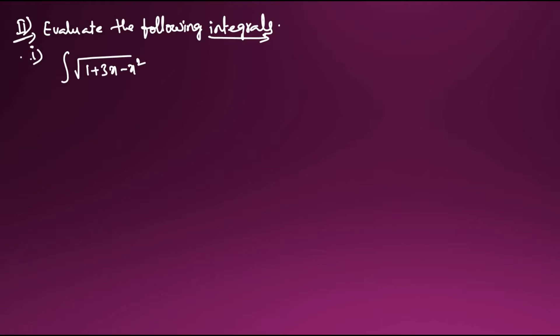The first question is: given that, evaluate the following integral — integral of √(1 + 3x - x²). So first, what we have to do is evaluate this in a complete-the-square form. Please don't panic while looking at the question; search for the solution only. Here the solution is: integral of √(1 - x² + 3x).